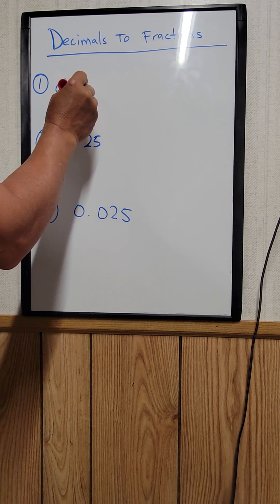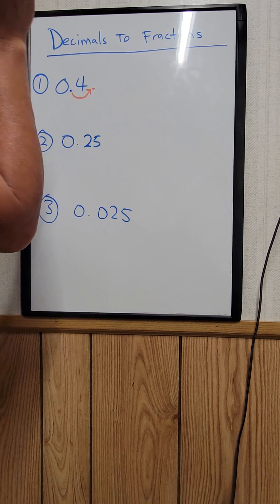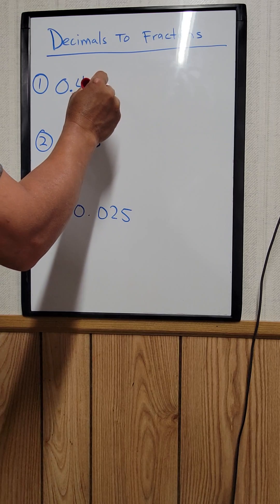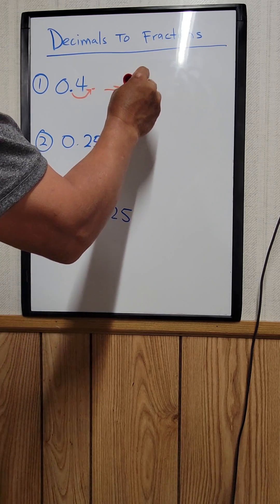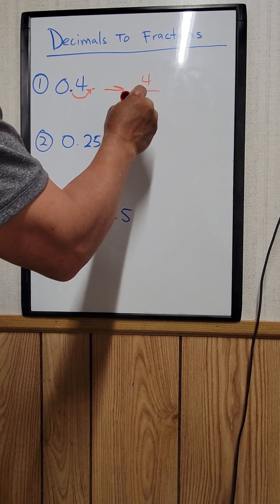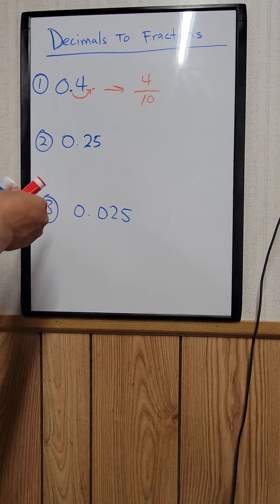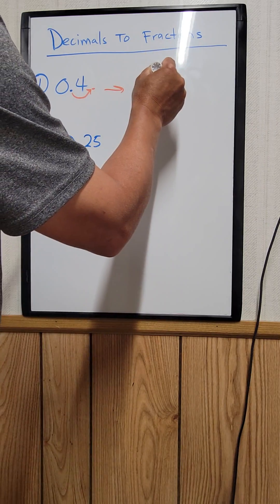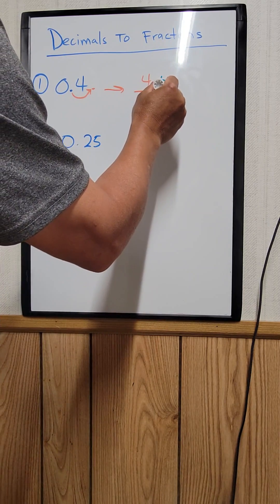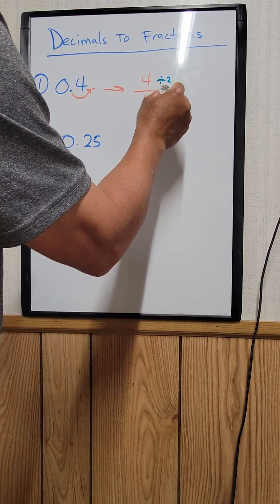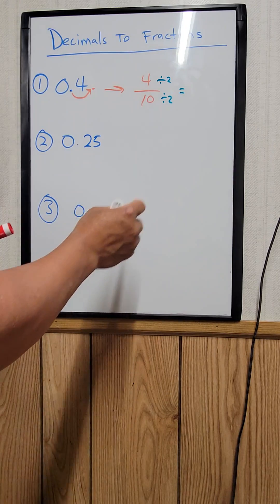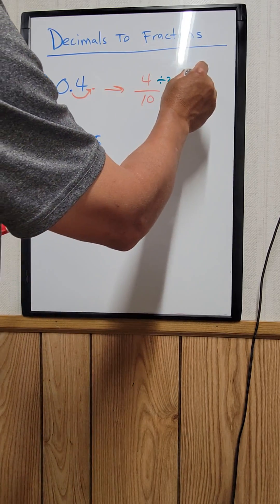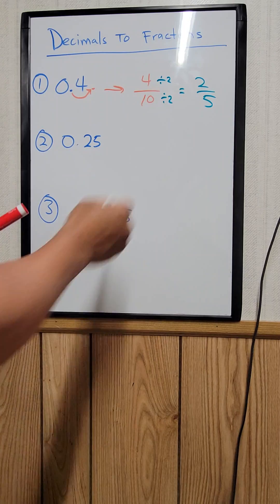You want to move the decimal point after the 4, so you move it one time. Therefore it's going to be 4 over 10. And if you divide the top and the bottom by 2, this equals 2 fifths.